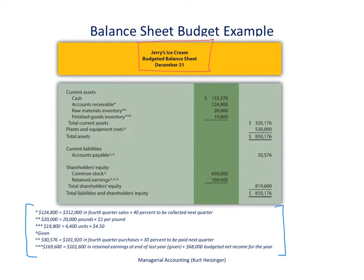The cash balance here comes directly from the cash budget. If you look at the video related to the cash budget, at the very bottom right, that's where we tracked the ending balance in cash. After we looked at all of our cash inflows and cash outflows for the period — we did it by quarter and then also at the end of the year — you will see that we expected to have cash of $155,576 at the end of the year.